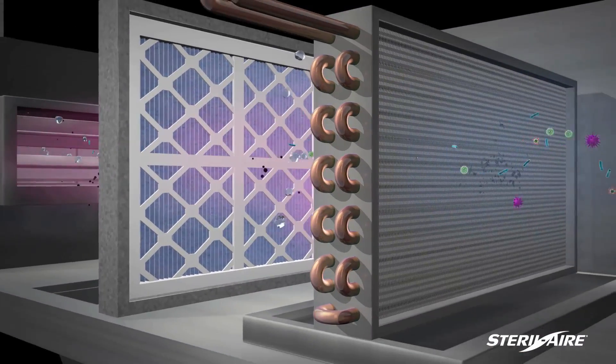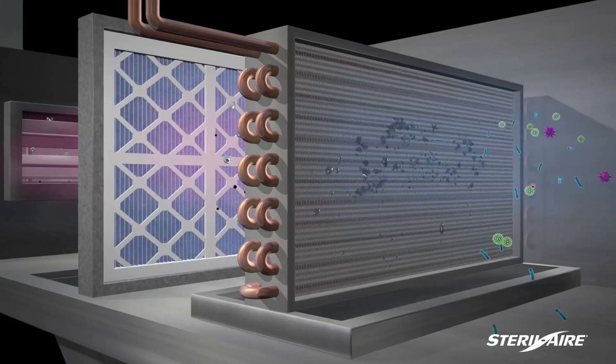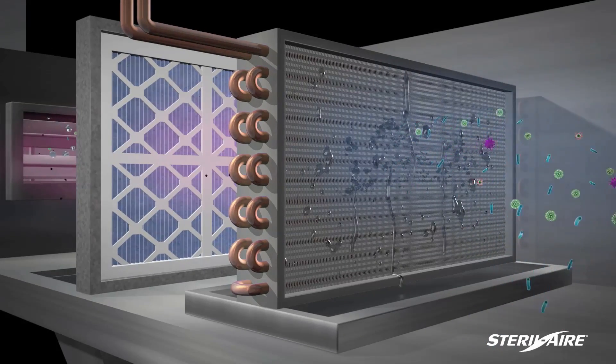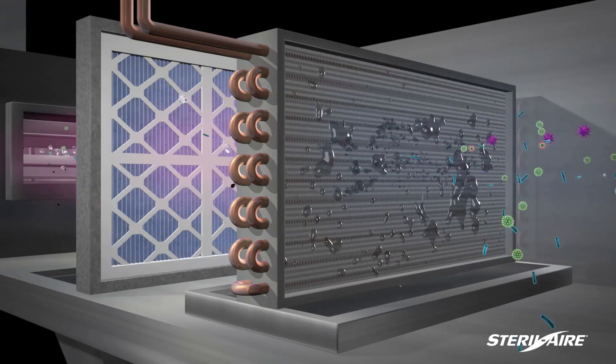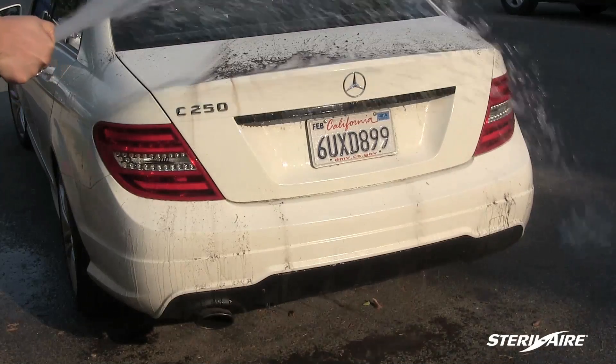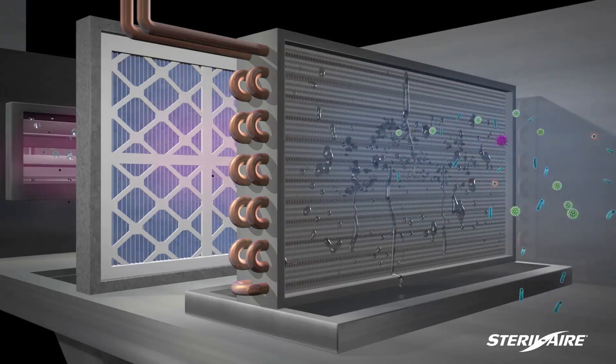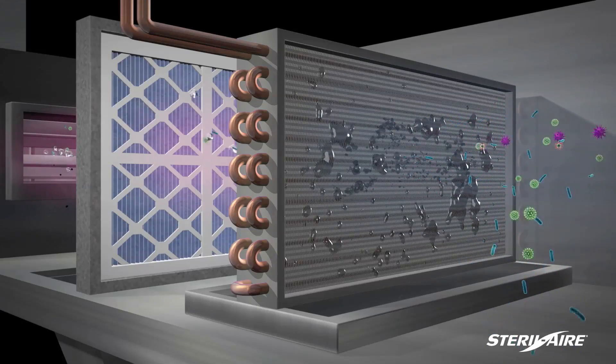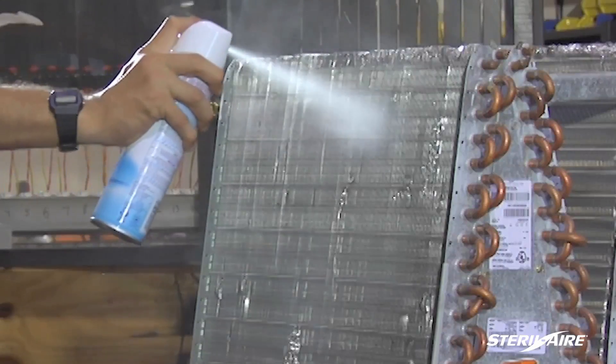When particulates pass through the primary filters and settle on the coil, we should expect the condensate that is produced when the warm air meets the cold coil to wash the particulates down into the drain pan. As easily as one washes mud off a car. But the dust stays on the coil, and often requires harmful chemicals to remove it.